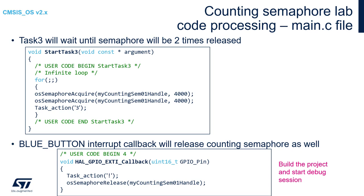Coming back to our example. After code modifications of the StartTask3 function, we can compile the code, start the debug session, open the SWV ITM console and start the application. The result should be the following: Task3 synchronized, then Task1 releases the counting semaphore, then Task2 releases the counting semaphore. Again Task3 is synchronized because there are two tokens available. Just after, Task3 is again in wait state waiting for two instances. So we need to wait until Task1 and Task2 release again, and it continues in the loop like this.